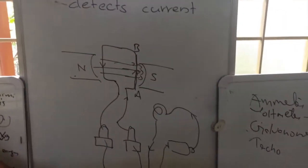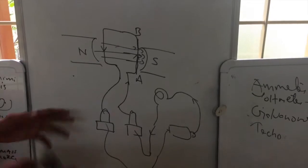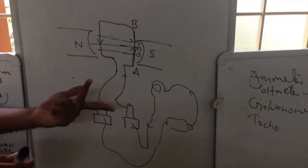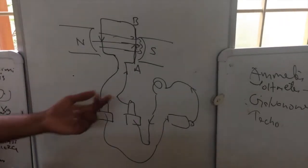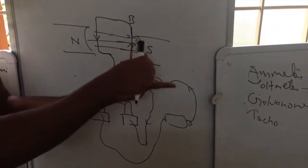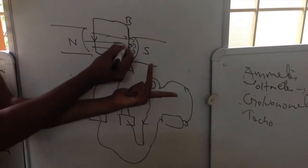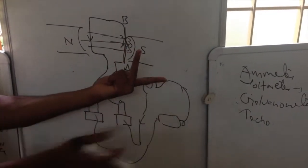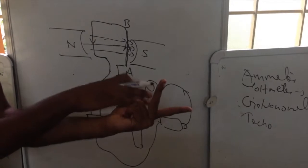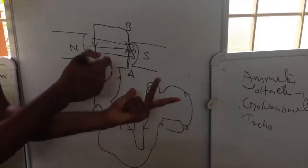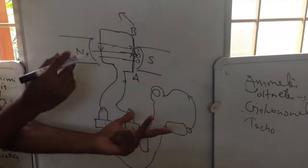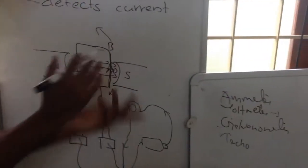This conductor AB experiences a force. The direction of this force can be found out by using left-hand rule. And when we are going to look for the left-hand rule, the central finger shows the direction of the current. This forefinger shows the direction of the field and the thumb shows the direction of force. That means AB experiences a force inward, so that AB is rotated inward.